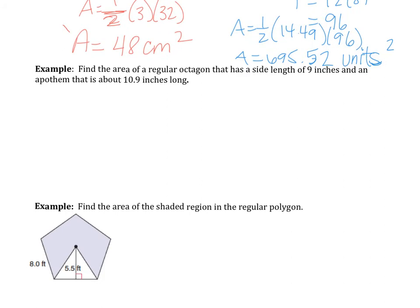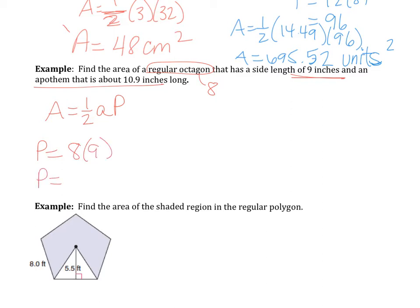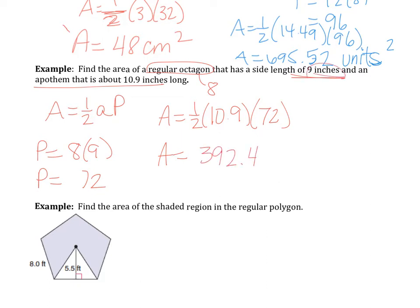Next example: find the area of a regular octagon with a side length of 9 inches and an apothem of 10.9 inches. I'll write the formula — area equals one-half the apothem times the perimeter. Perimeter is 8 times 9 inches, so perimeter equals 72. Area equals one-half times 10.9 times 72, so area equals 392.4 inches squared.